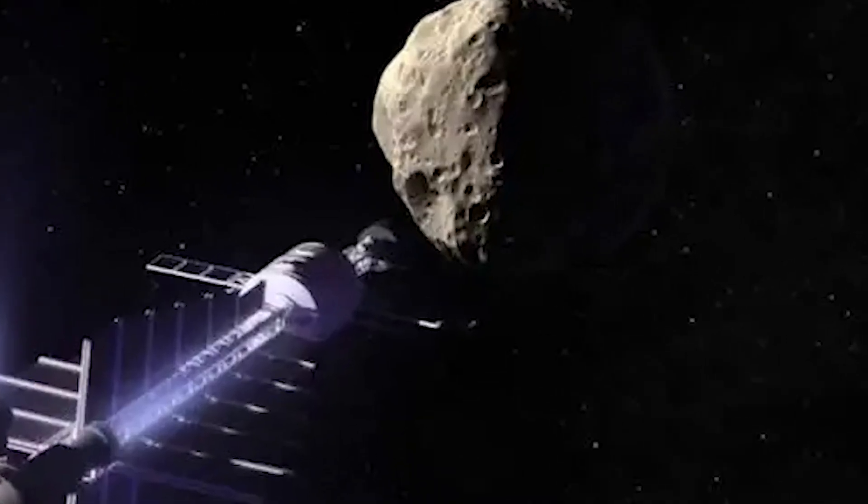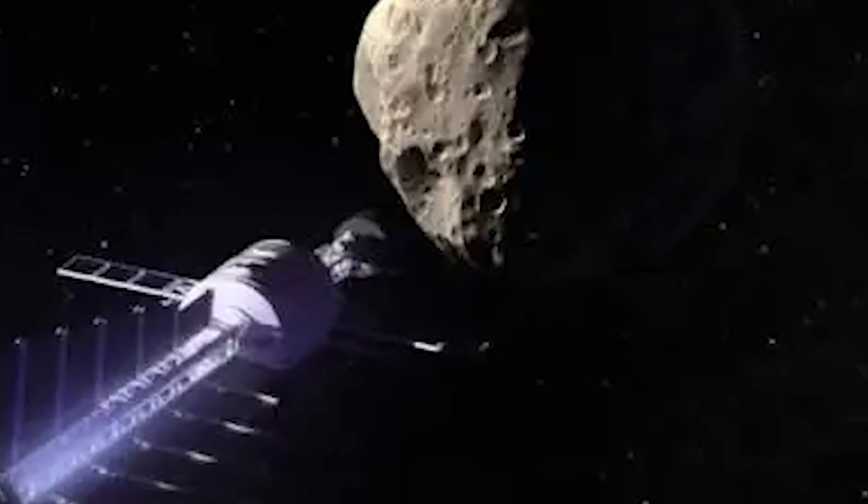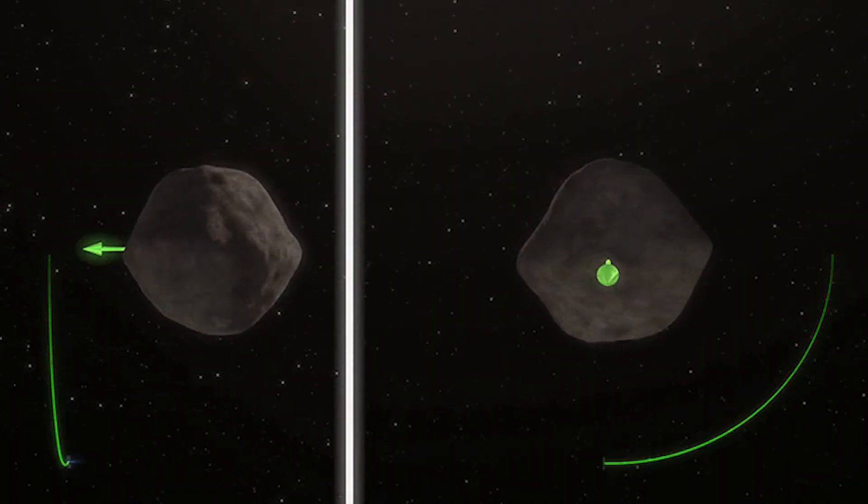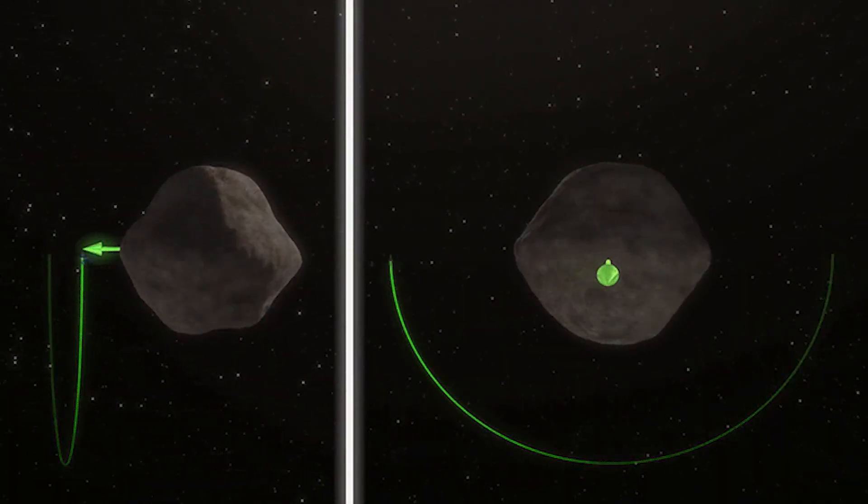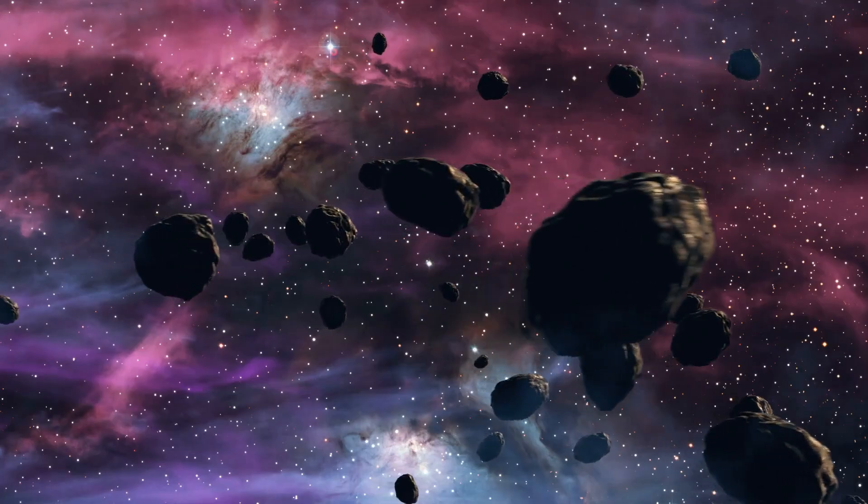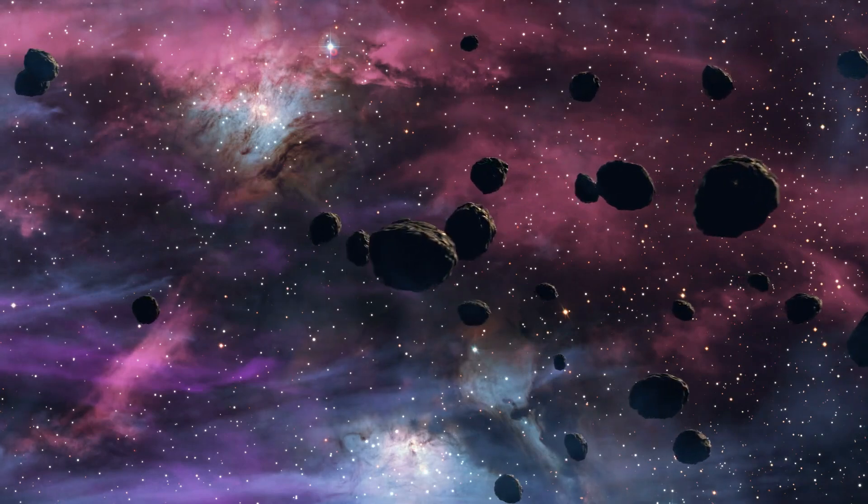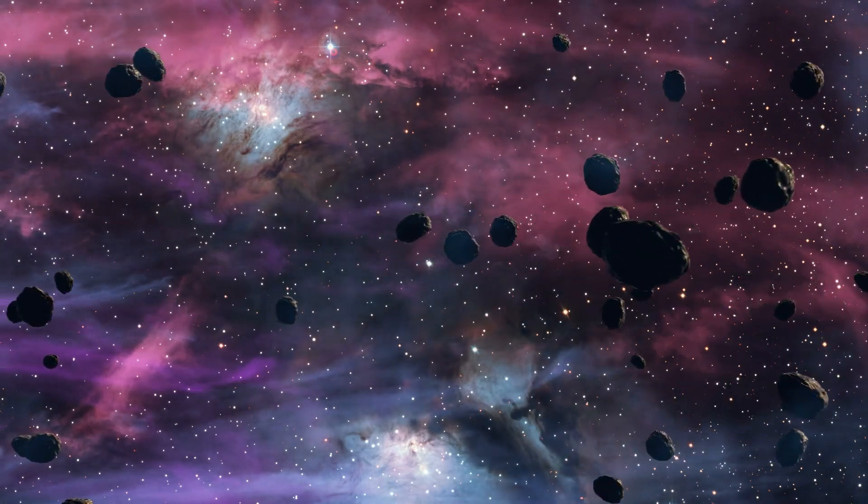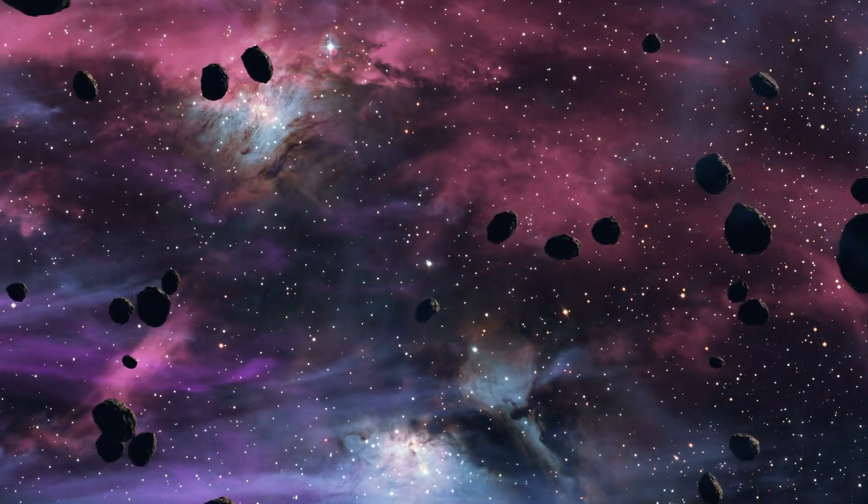Another nifty idea is the gravity tractor. Picture a spacecraft just hanging out near an asteroid for a long time, using its own gravity to slowly but surely pull the asteroid into a safer orbit. It's a slow and steady approach and less likely to break the asteroid apart. But it's a bit like watching paint dry. It takes a long time.